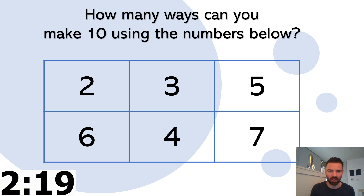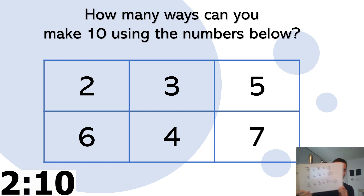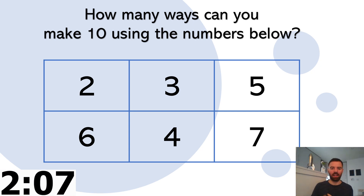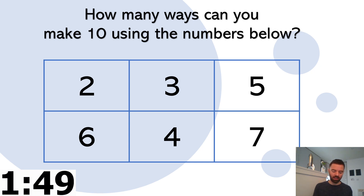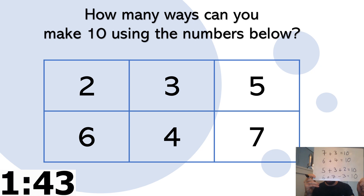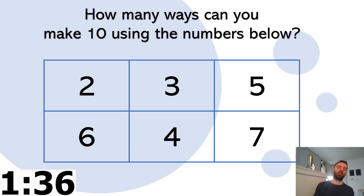Five add three add two — that's ten. Five add three add two. Now all I'm doing is adding at the moment. Could I maybe add and take away? Let me think — six add seven is thirteen, take away three is ten. I've got four solutions.